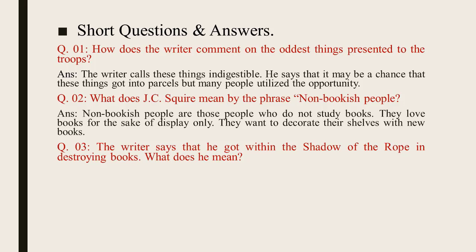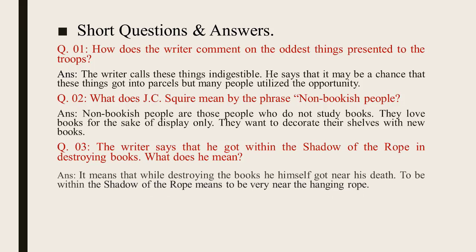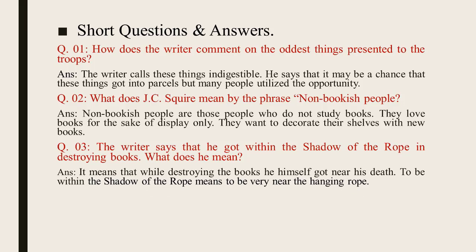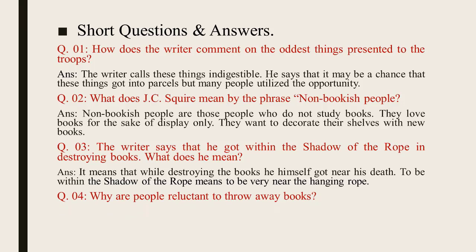Question number 3: The writer says that he got within the shadow of the rope in destroying books — what does he mean? The answer is, it means that while destroying the books he himself got near his death. To be within the shadow of the rope means to be very near the hanging rope — it means he brought himself very close to death.